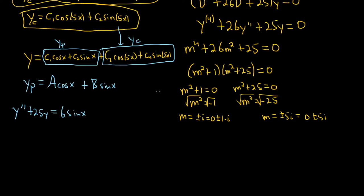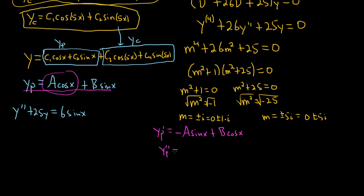The next step is to take derivatives and plug in to find a and b. So y_p = a cos(x) + b sin(x). Then y_p' = −a sin(x) + b cos(x). Taking the derivative again: y_p'' = −a cos(x) − b sin(x).